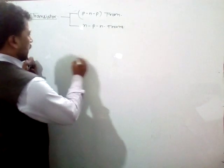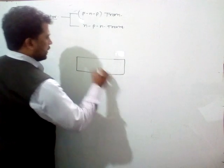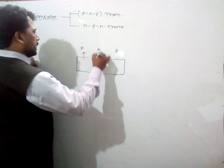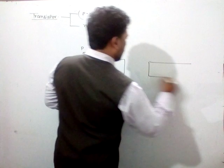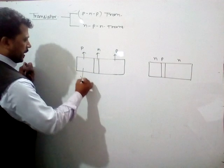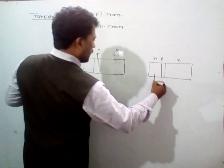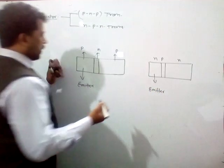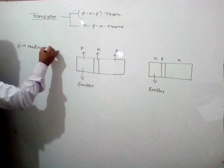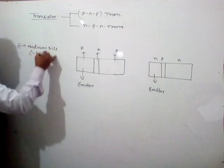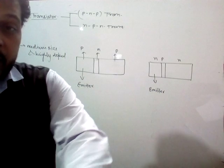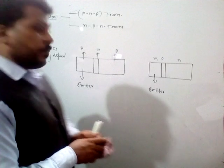So in both transistors, PNP or NPN, the first region is the emitter. It is medium size and highly doped. The working of the emitter is to fulfill — that is, supply — the majority of charge carriers.